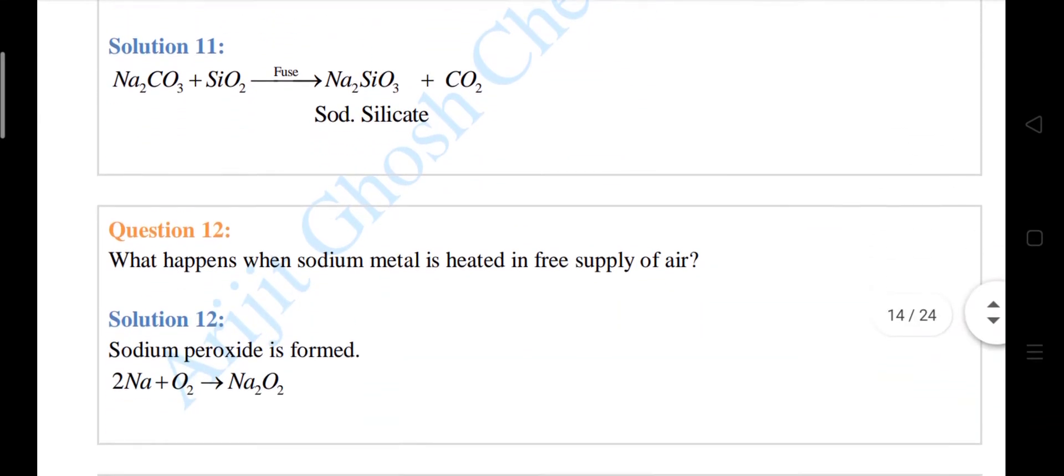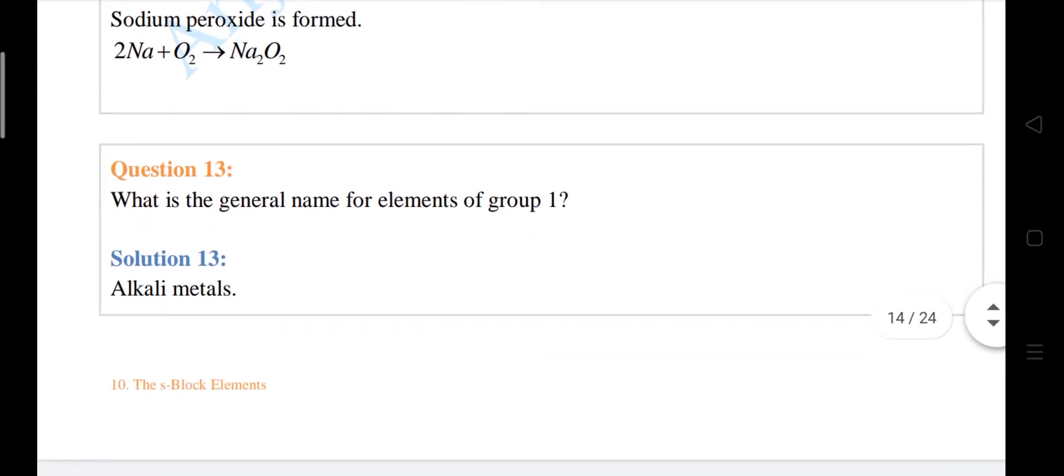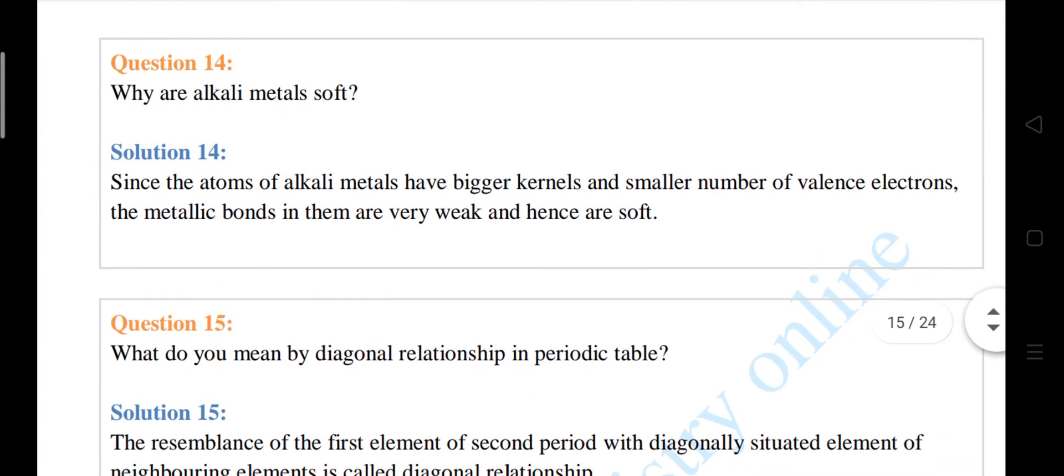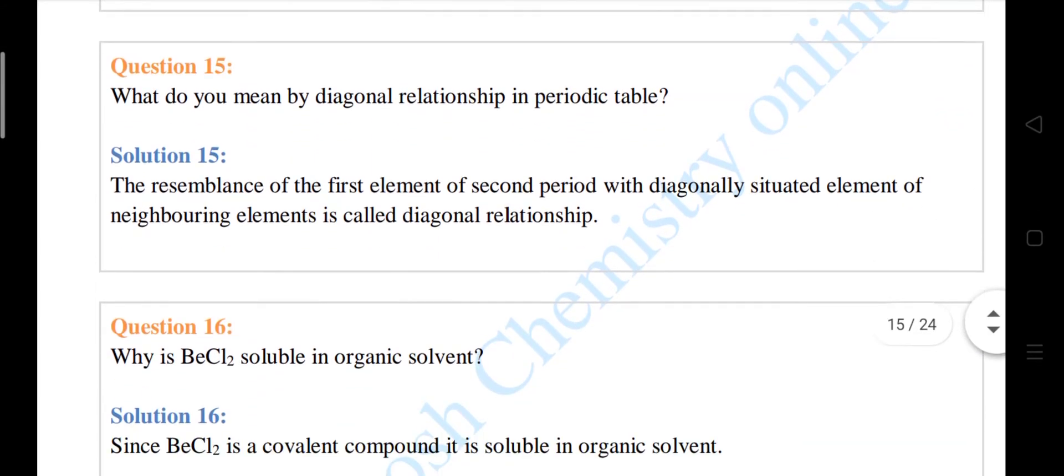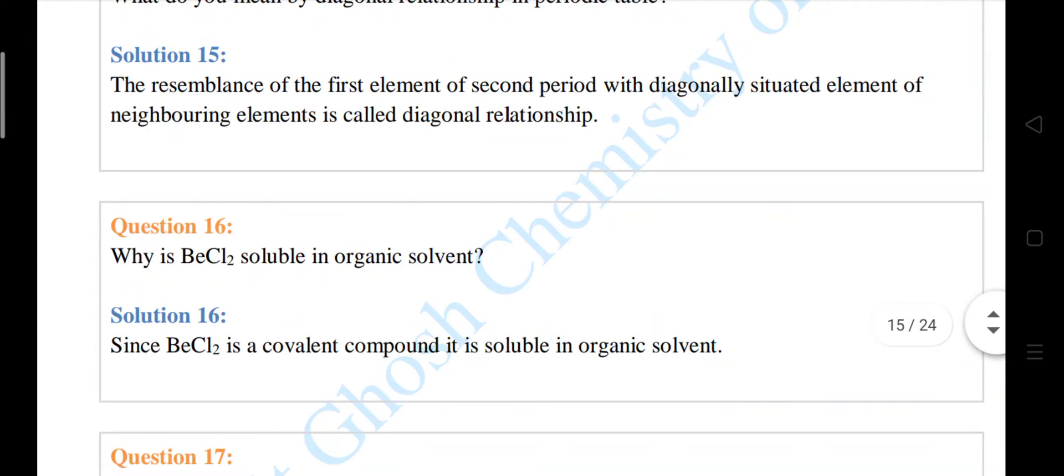Formula of Epsom salt. Sodium silicate from silica. Why alkaline metals are soft? What do you mean by the diagonal relationship between the periodic table? It resembles the first element in the second period with diagonal situated element, neighboring elements, called diagonal relationship.